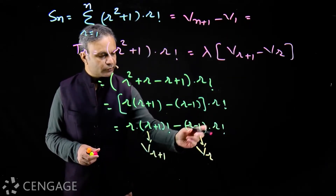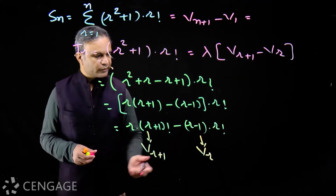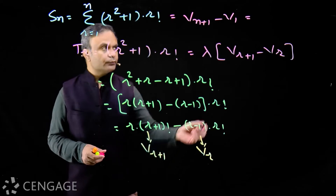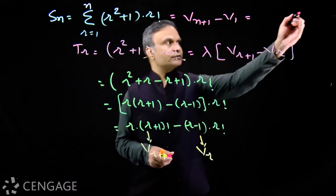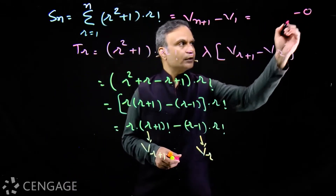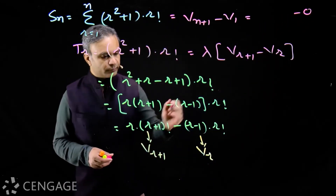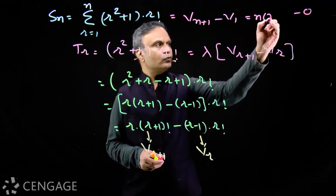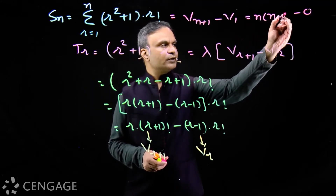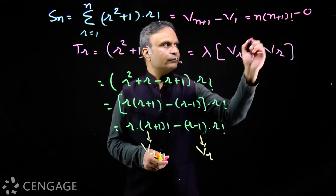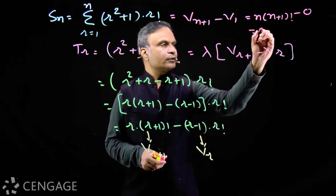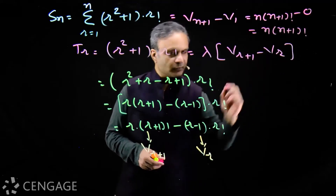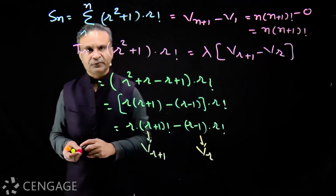The sum of n terms will be v(n+1) minus v1. Now v1: putting r = 1, we get v1 = 0. And v(n+1) will be n into (n+1) factorial. So the sum is n into (n+1) factorial.